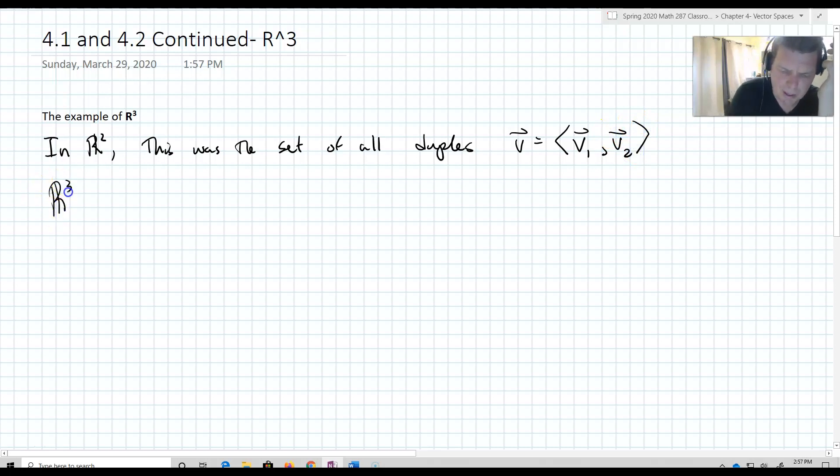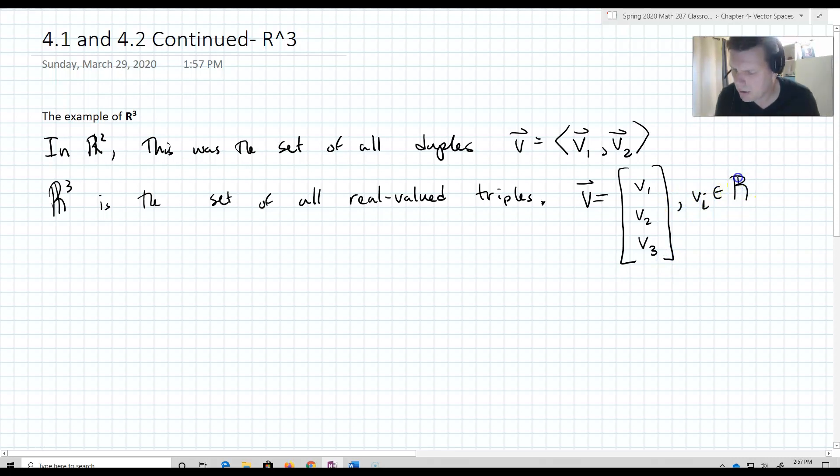So, R³ is the set of all triples, all what we call real-valued triples. That is, there are real numbers within the vectors. So, this is V equal to, and we'll write them as column vector V1, V2, V3. Now, these are the triples. And V1, we'll call them the V_i's, belong to R. Really important that that's the case.